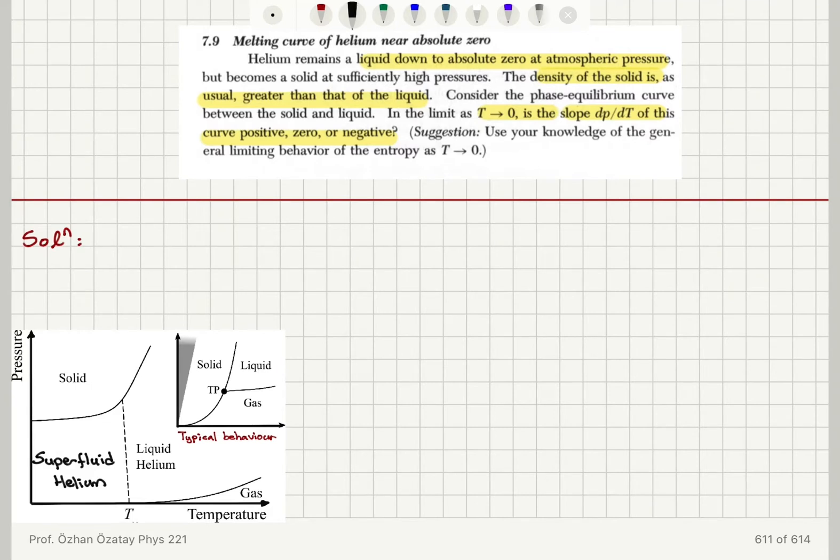Now we have the Clausius-Clapeyron equation: dP/dT is the change in entropy divided by change in volume, S2 minus S1. This could be per molecule or per mole. V2 minus V1.